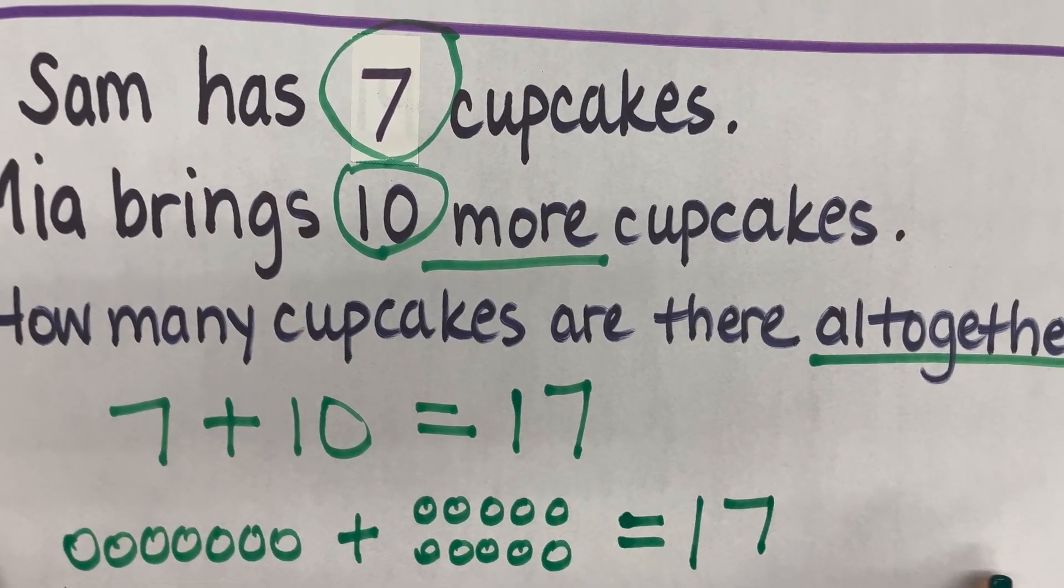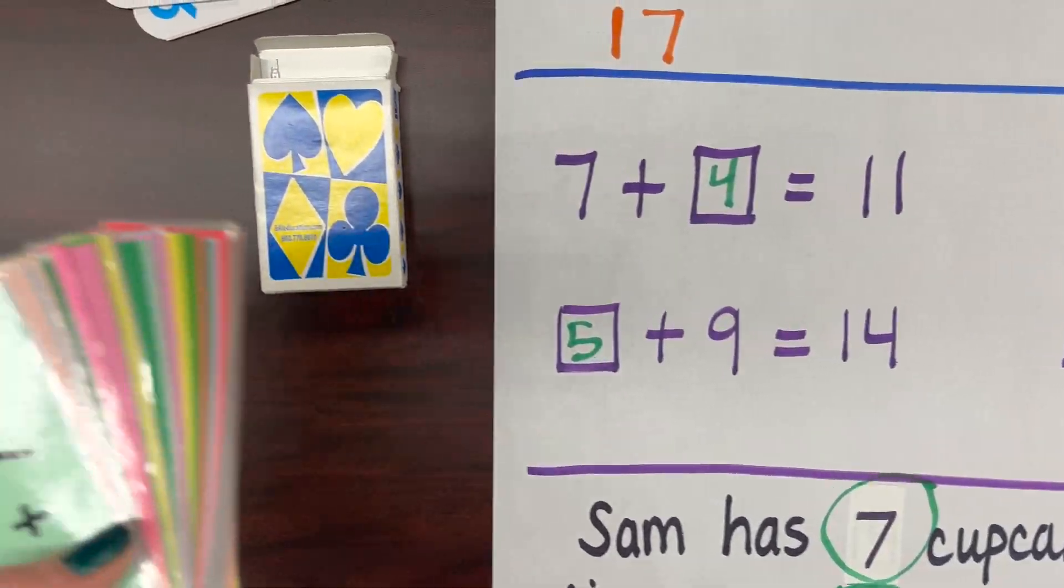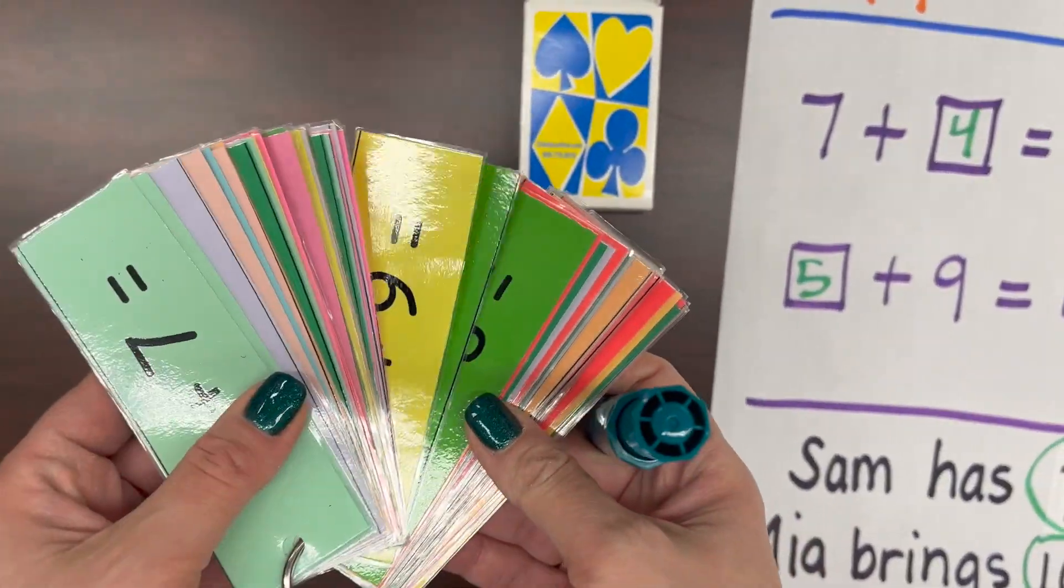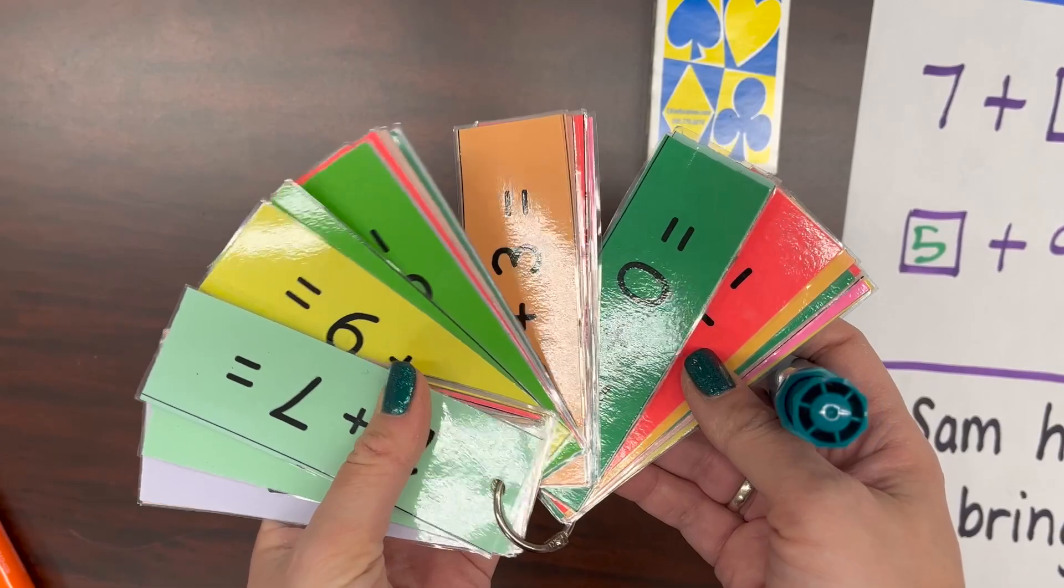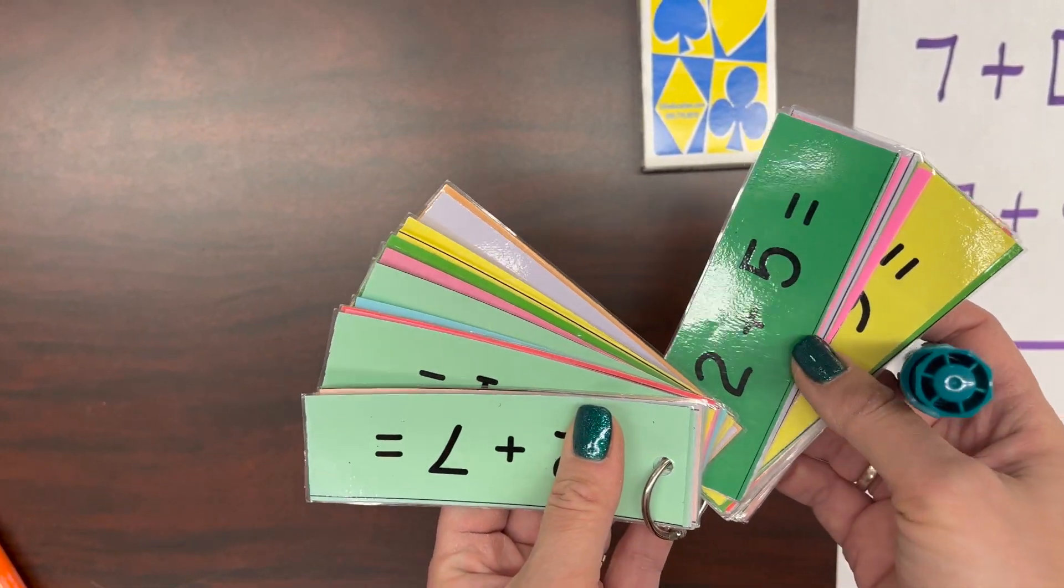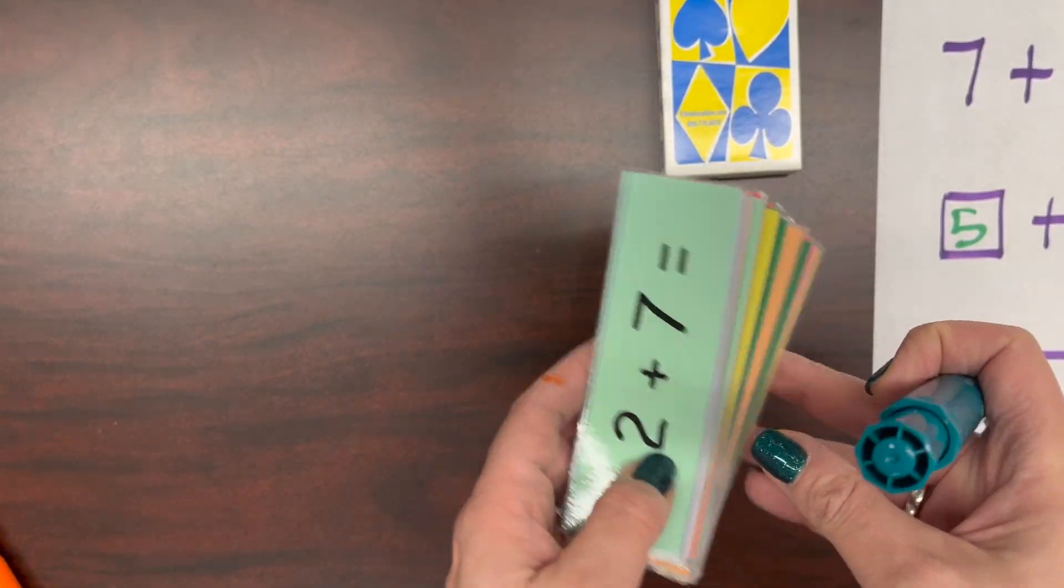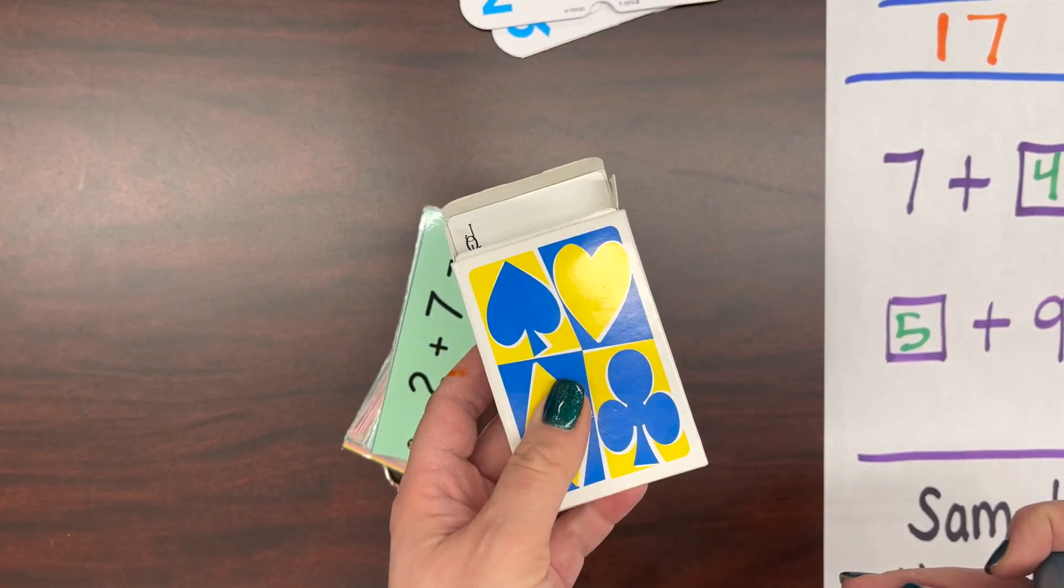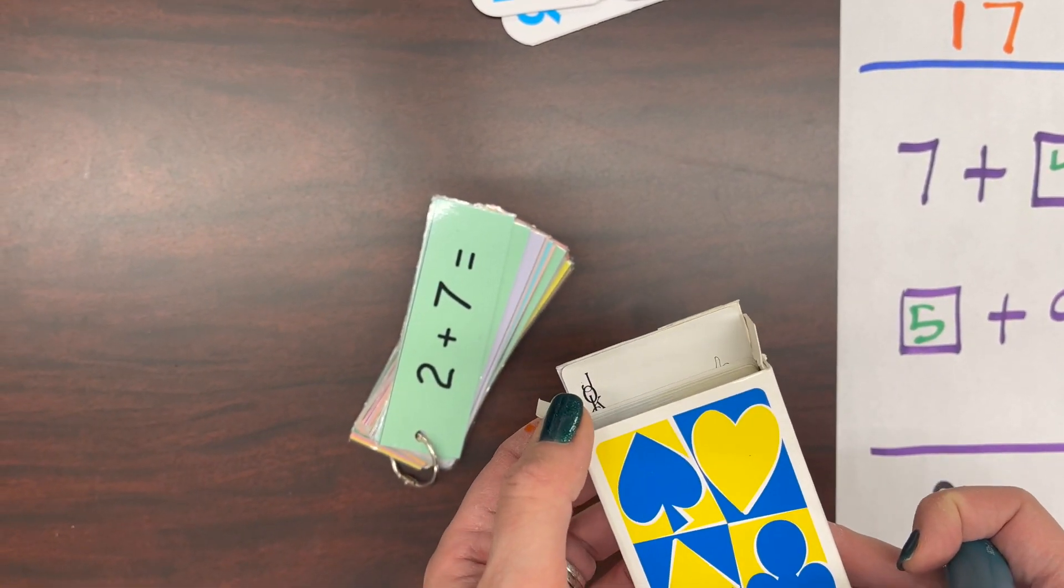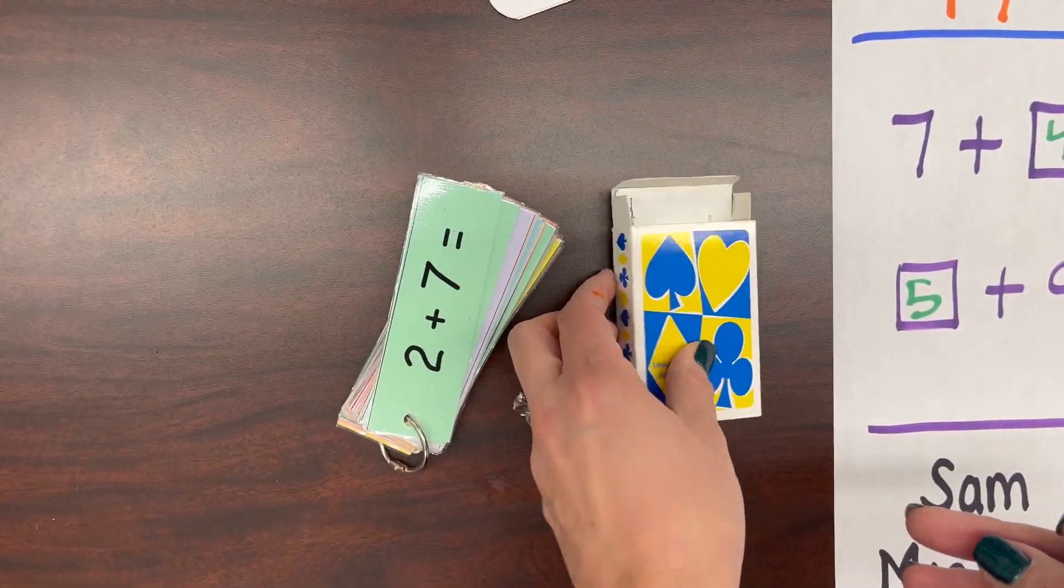While we are on the conversation of adding within 20, these are some items that you can use to help support kids at home. There are these flash cards that we can provide you from the school or you can certainly pick them up at the dollar store or at another educational store to help students with automaticity of their facts, learning them quickly. You can also use playing cards. You can play addition games, you can play comparing games in terms of using these playing cards.